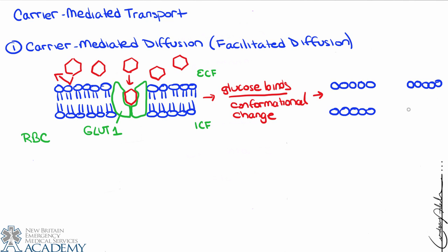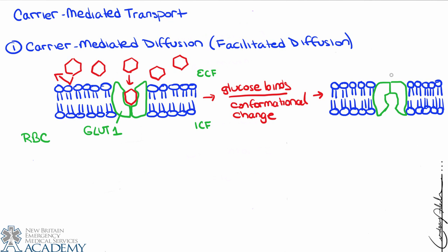The glucose will bind on the inside of the GLUT1 transporter, and when glucose binds it causes a conformational change — meaning the protein changes shape on account of something specific happening, in this case glucose binding. We can redraw the protein facing the opposite direction: the transporter closes on the ECF side and opens on the ICF side. As it opens on the ICF side, the glucose naturally wants to come out because it's in very low concentration inside the cell.